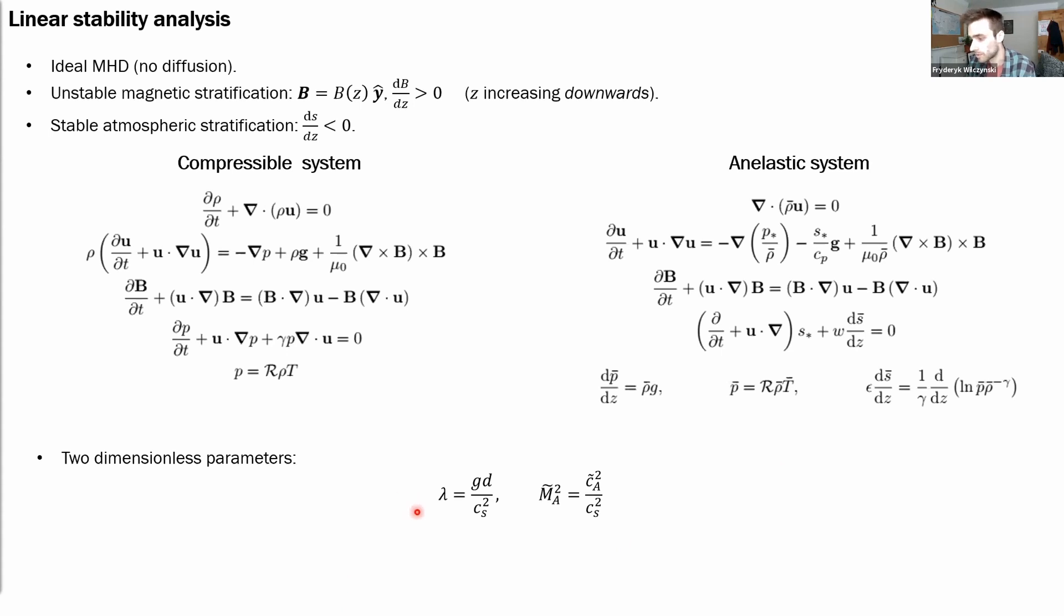One is lambda, which is a measure of stratification of the atmosphere. And the other is this now scaled Alfvén Mach number, which the important thing to remember is for the